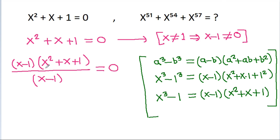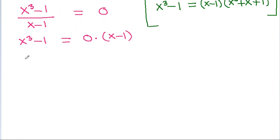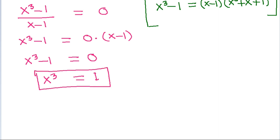So x minus 1 times x squared plus x plus 1 equals x cubed minus 1. Dividing by x minus 1 gives zero, so x cubed minus 1 equals 0, meaning x cubed equals 1. Now we have to find the value of x power 51 plus x power 54 plus x power 57.